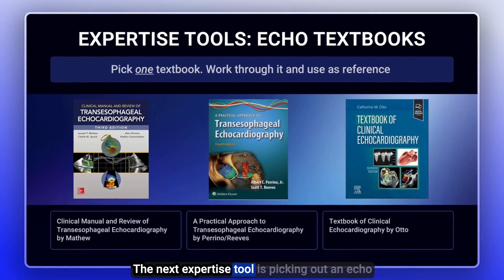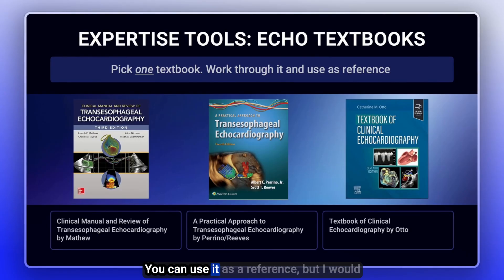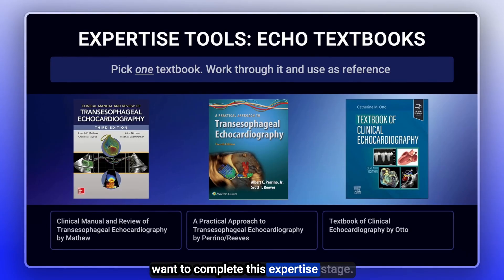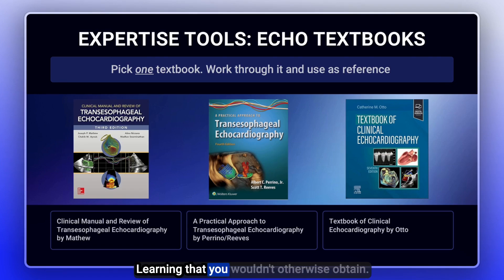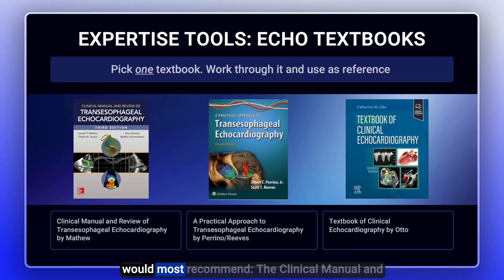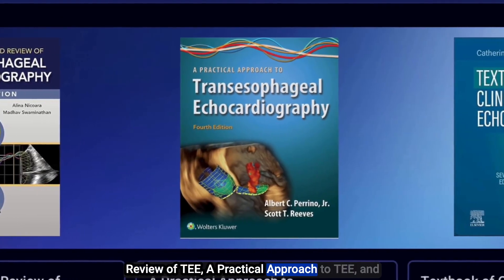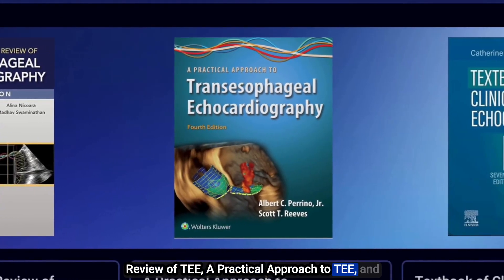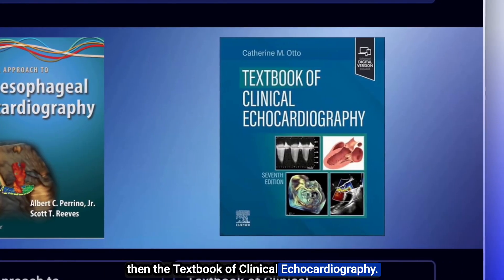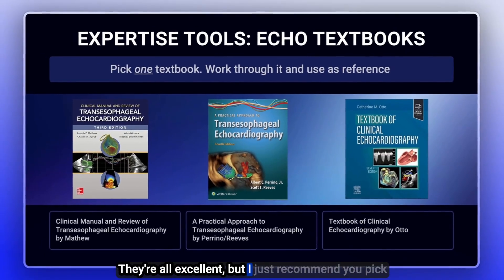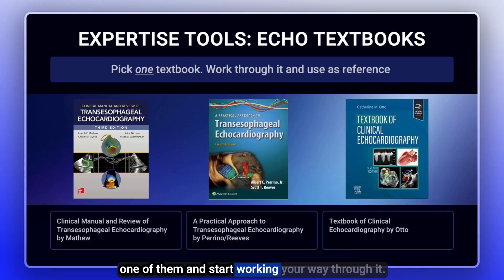The next expertise tool is picking out an echo textbook and working your way through it. You can use it as a reference, but I would recommend reading through it if you really want to complete this expertise stage. The three textbooks I would most recommend are: the Clinical Manual and Review of TEE, A Practical Approach to TEE, and the Textbook of Clinical Echocardiography. They're all excellent — just pick one of them and start working your way through it.